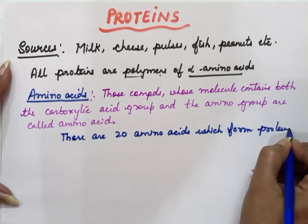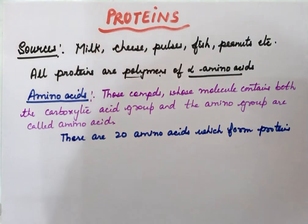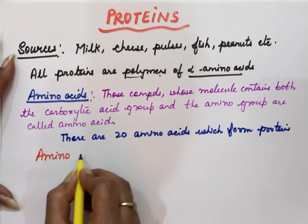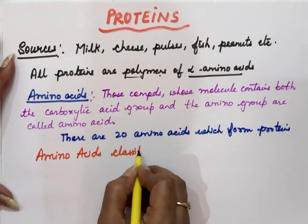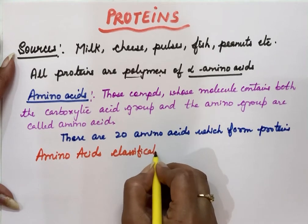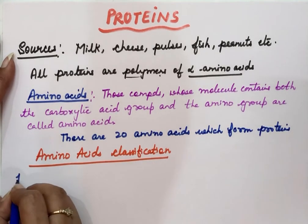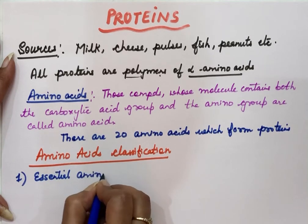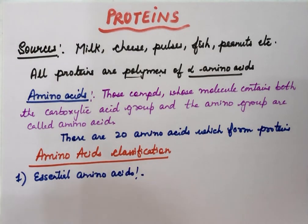So sources of proteins we have done, and proteins are made up of amino acids. Next we have classification of amino acids. One type of classification is they are classified as essential and non-essential amino acids. Essential amino acids are required by the body but the body cannot synthesize these, so it is necessary to take these amino acids in a diet.